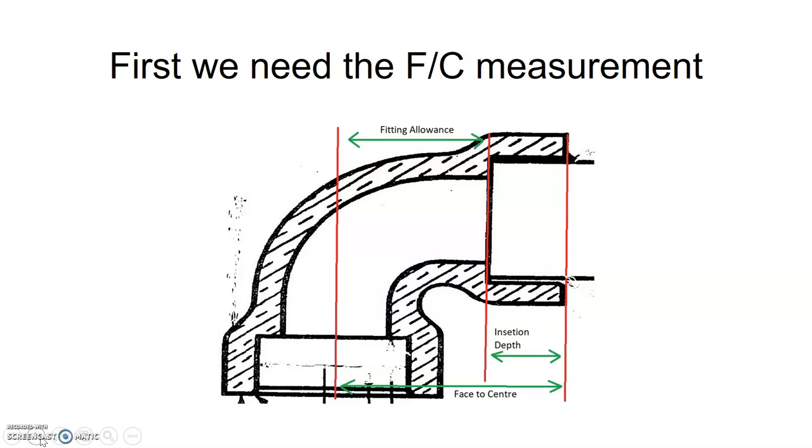So first, in order to find the fitting allowance, we need to get the face-to-center measurement. There are a number of ways of getting it, either off the specs from the manufacturer or by simply measuring from the face of the fitting to the center with our measuring tape.